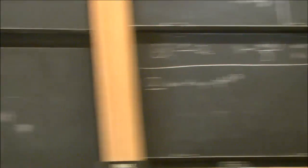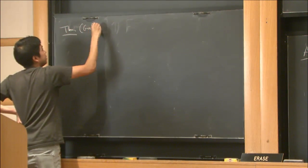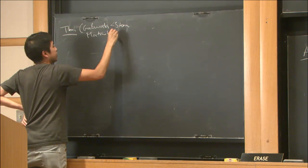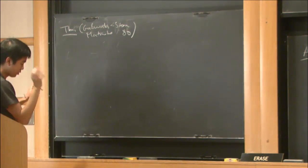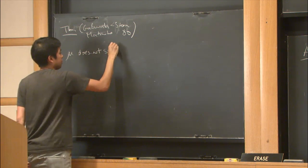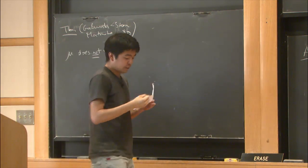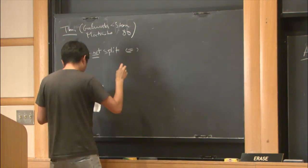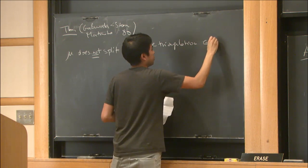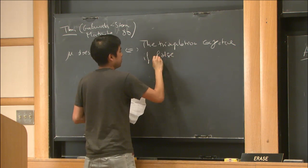This is a theorem by Galewski-Stern and Matumoto in the 80s. μ does not split if and only if the triangulation conjecture is false in high dimensions.